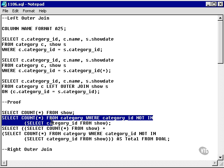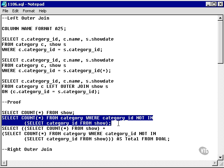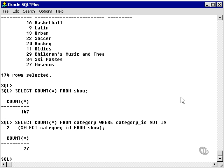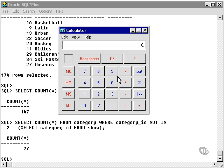Now let's go and count the records in the category that do not have any category entries in the show table. In other words, categories that do not exist as shows. This gives me 27 records. If I take 147 and 27 and I add them up, I get 174 rows.